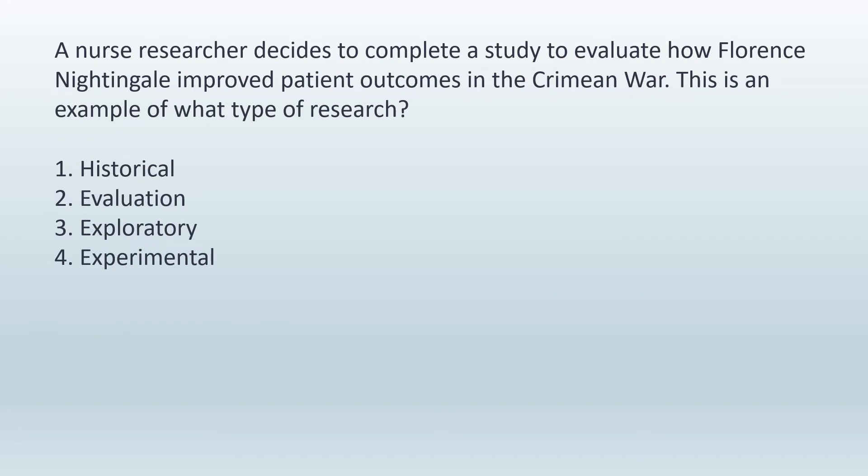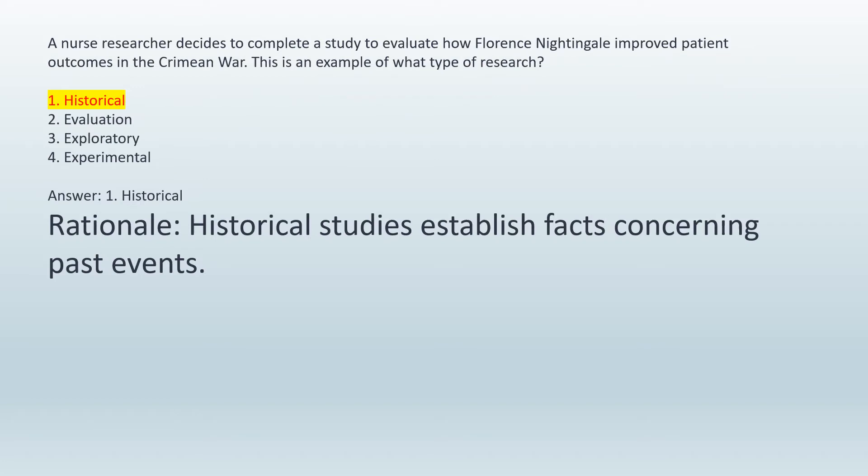A nurse researcher decides to complete a study to evaluate how Florence Nightingale improved patient outcomes in the Crimean War. This is an example of what type of research? 1. Historical. 2. Evaluation. 3. Exploratory. 4. Experimental. Answer: 1. Historical. Rationale: Historical studies establish facts concerning past events.